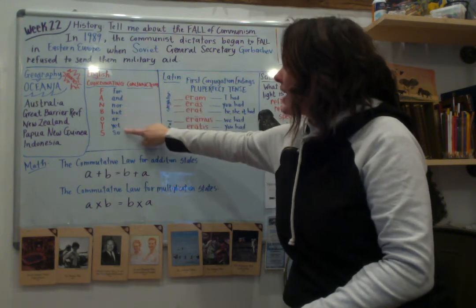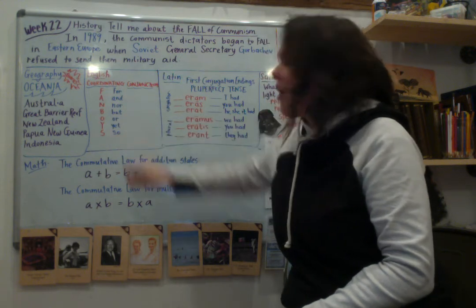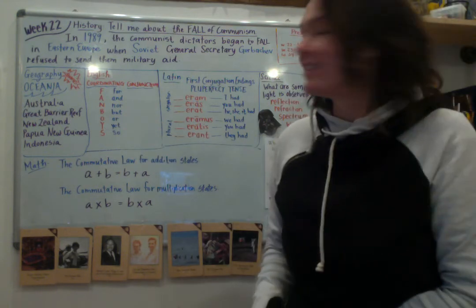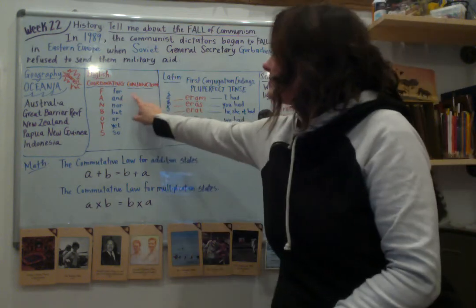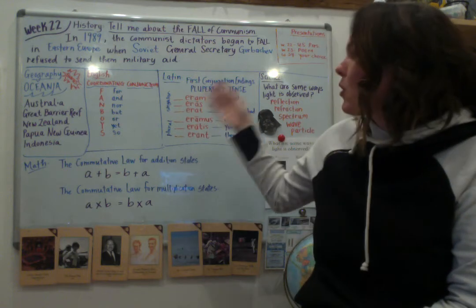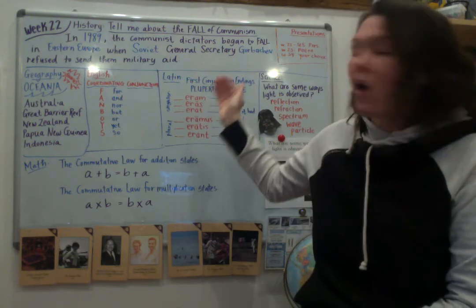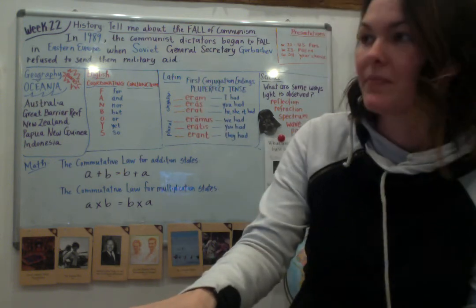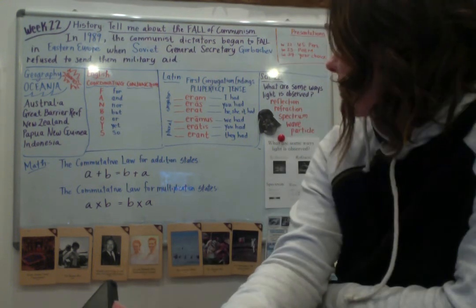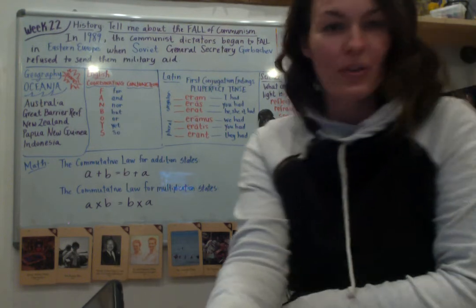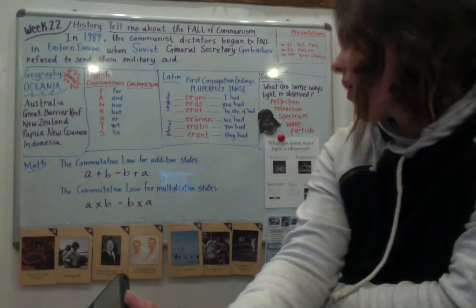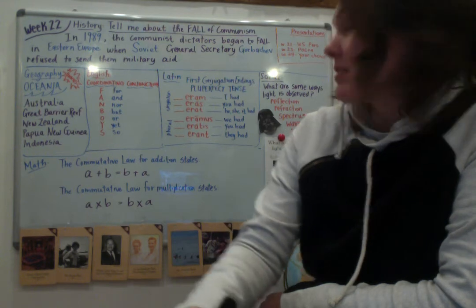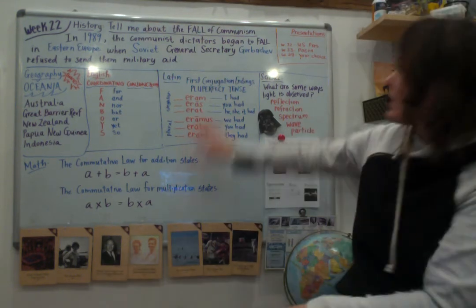Fan boys is all you need to know. For and nor, but or yet so. Fan boys is all you need to know. For and nor, but or yet so. So my speakers just died. But there you go. Coordinating conjunctions. Fan boys is all you need to know. For and nor, but or yet so. We're going to listen to that one more time. For and nor, but or yet so. Fan boys is all you need to know. For and nor, but or yet so. Very good. And we will also send the coordinating conjunction song out.